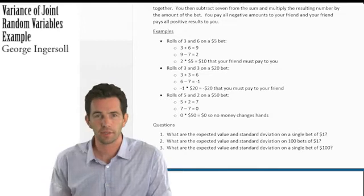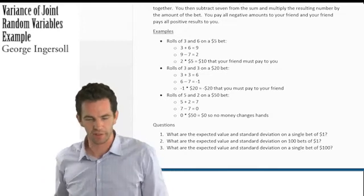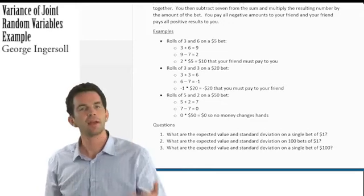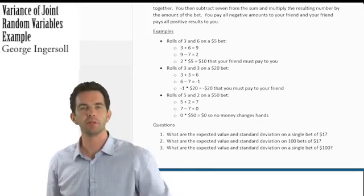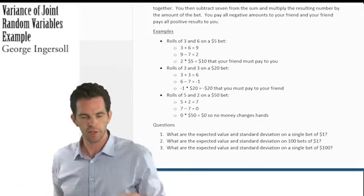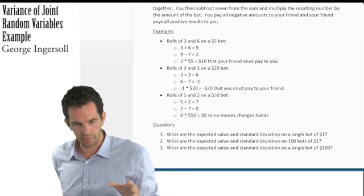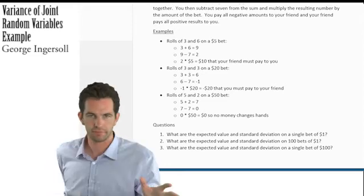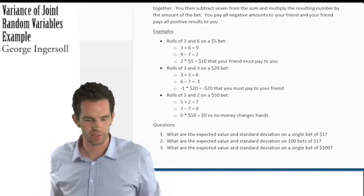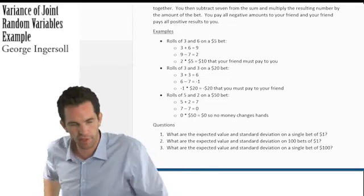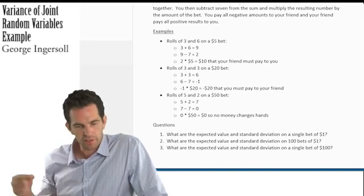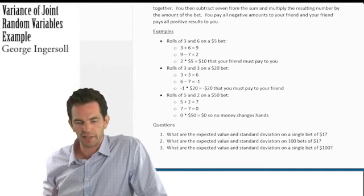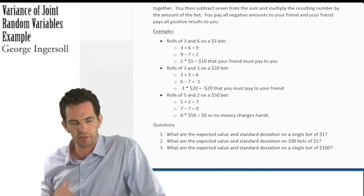You and your friend are playing a betting game I made up. You roll two six-sided dice and add the results together — you can get anything between 2 and 12. You then subtract 7 from the sum and multiply the resulting number by the amount of the bet. You pay all negative amounts to your friend, and your friend pays all positive results to you.